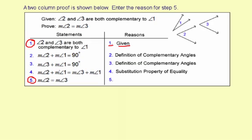And let's look at this next statement. We have measure of angle 2 plus measure of angle 1 equals measure of angle 3 plus measure of angle 1. Right here, and right here. That's where these pieces of information come from. From step 2, measure of angle 2 plus measure of angle 1 equals 90 degrees.